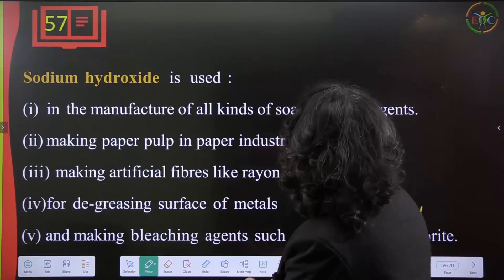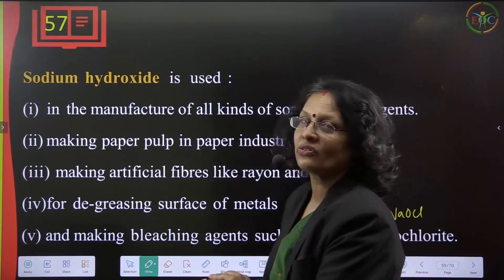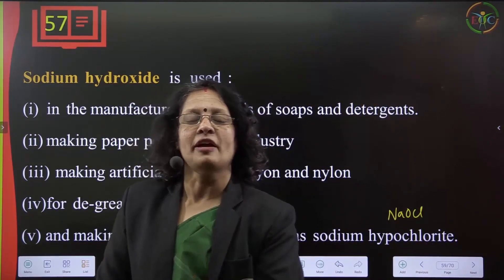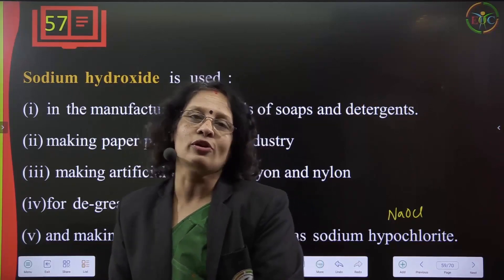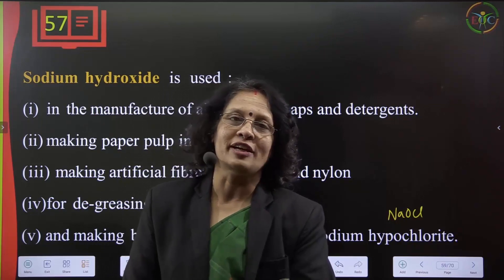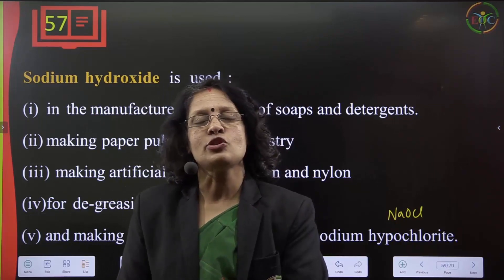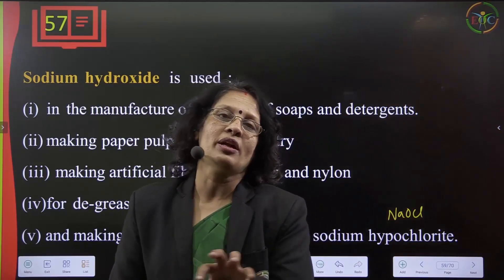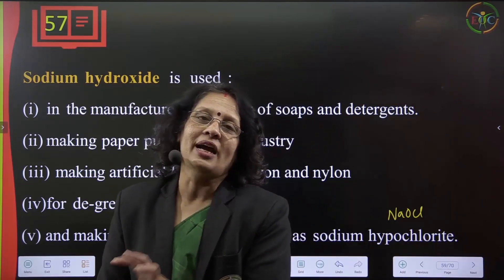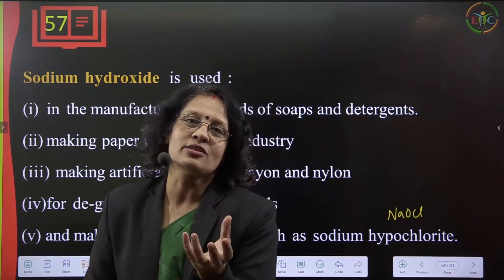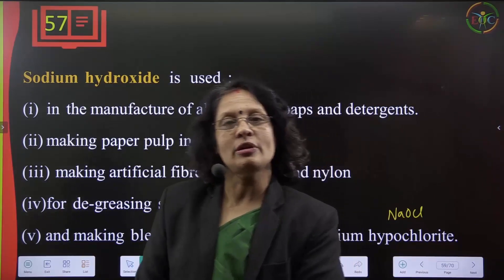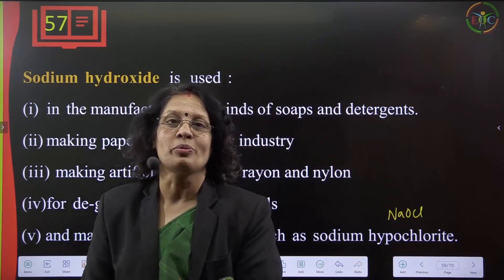Sodium hydroxide can be used in manufacturing all kinds of soaps and detergents. Fatty oil treated with sodium hydroxide gives the sodium salt of fatty acids — this is called sodium soap. Treated with potassium hydroxide, you get potassium soap.